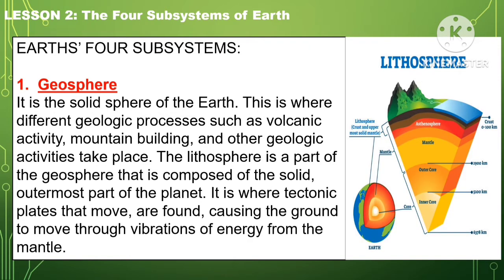The first one is the geosphere. It is the solid sphere of the Earth. This is where different geologic processes such as volcanic activity, mountain building, and other geologic activities take place. The lithosphere is a part of the geosphere that is composed of the solid outermost part of the planet. It is where the tectonic plates that move are found, causing the ground to move through vibrations of energy from the mantle.